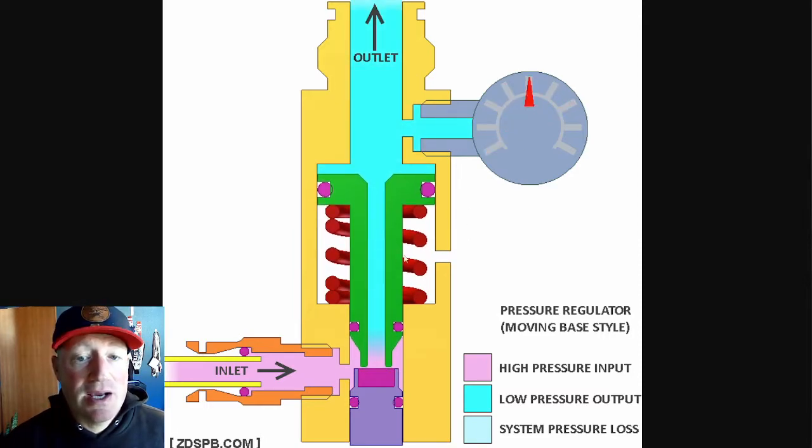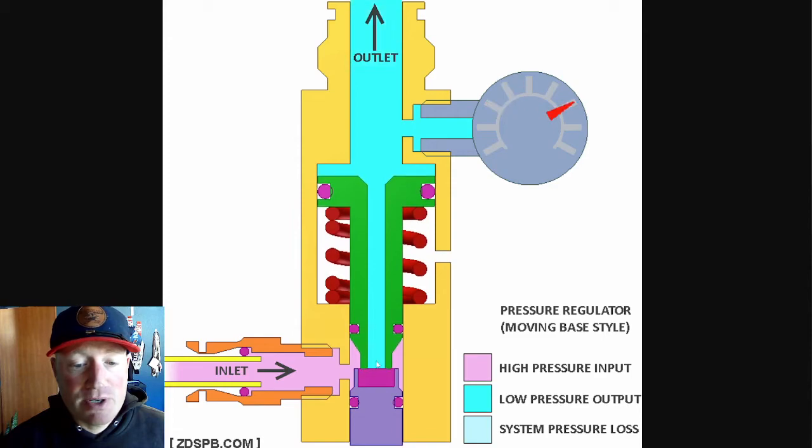So essentially, once you fire your paintball gun or relieve the pressure from the top of this, the piston is going to be able to come up because the spring is pushing it up, which is going to allow more pressure of the high input pressure to go in here to again build up this pressure to push down. Essentially, it's just like an on-off. So that's kind of how it works. Hopefully that all makes sense.